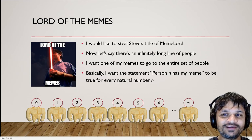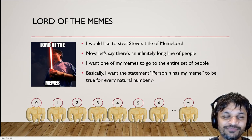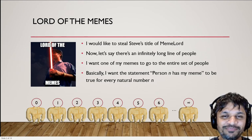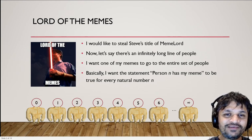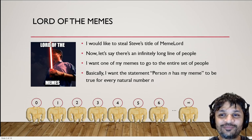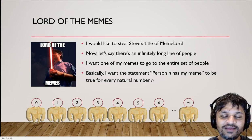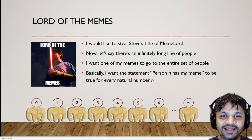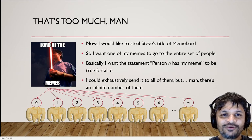So here's an illustrative example. Let's say my goal is to steal Steve's title of meme lord — you guys had Steve lecturing last year, you know he's the lord of the memes, but now I'm going to dethrone him. To dethrone him I need to make sure everyone gets hold of my memes. Let's say there's an infinitely long line of people and I want one of my memes to go to every person. More mathematically: if I make the statement 'person n has my meme,' I want that to be true for every natural number n.